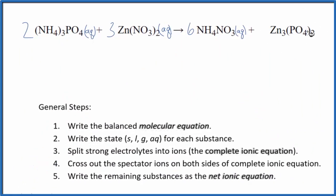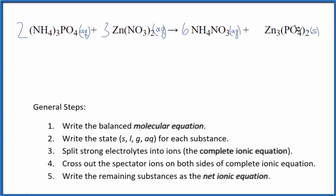So because of that, the zinc phosphate is going to be a solid. These two compounds here will react, and this will be a solid. It'll fall to the bottom of the test tube in a precipitation reaction. So we have the states. Now we can split the strong electrolytes into their ions, and that'll give us the complete ionic equation.